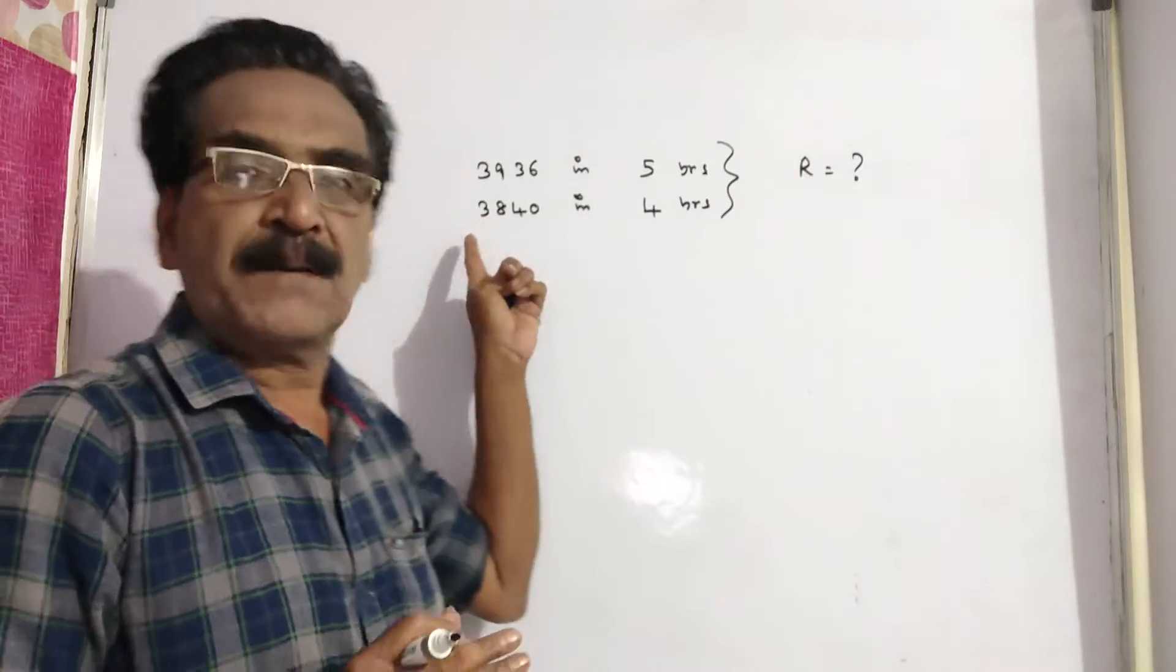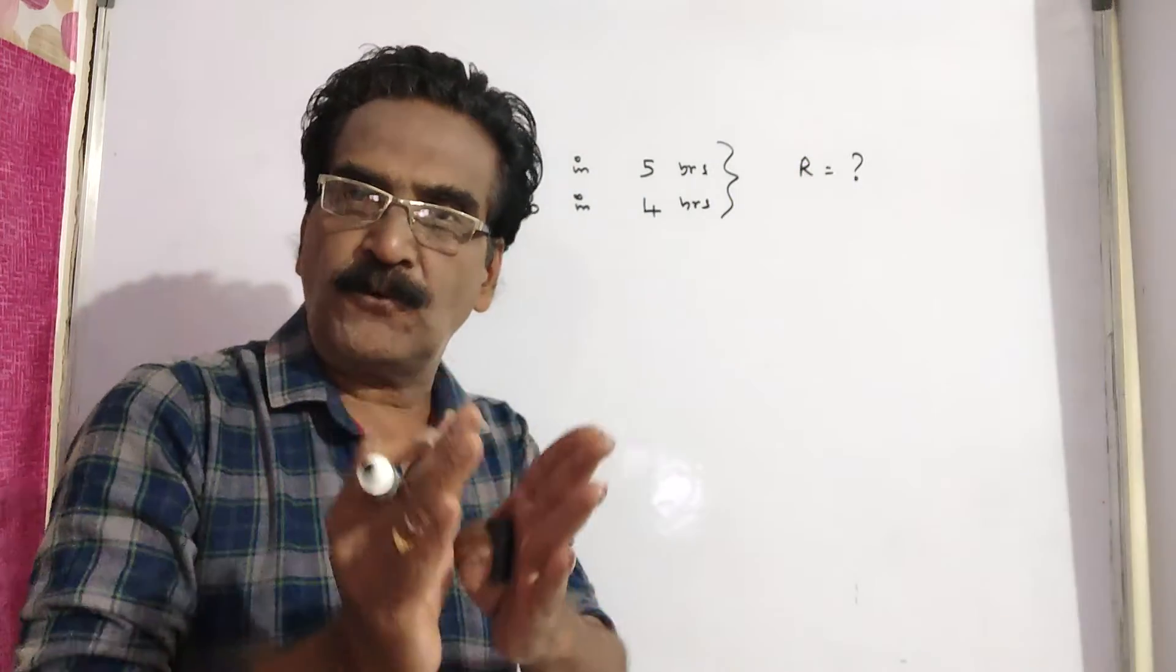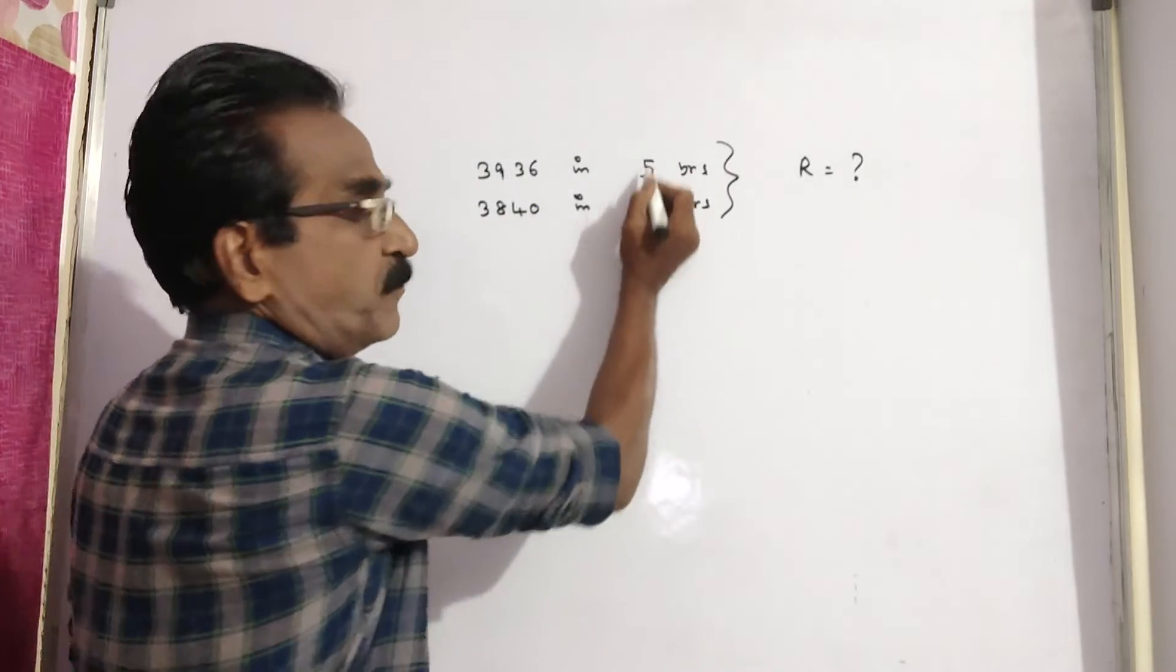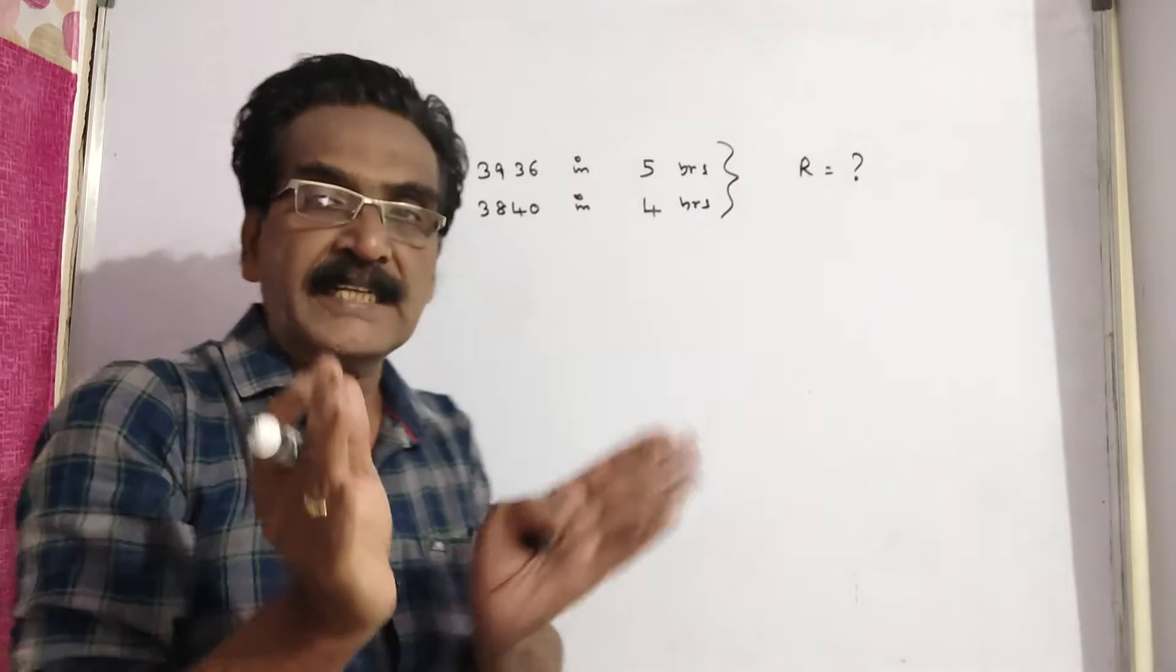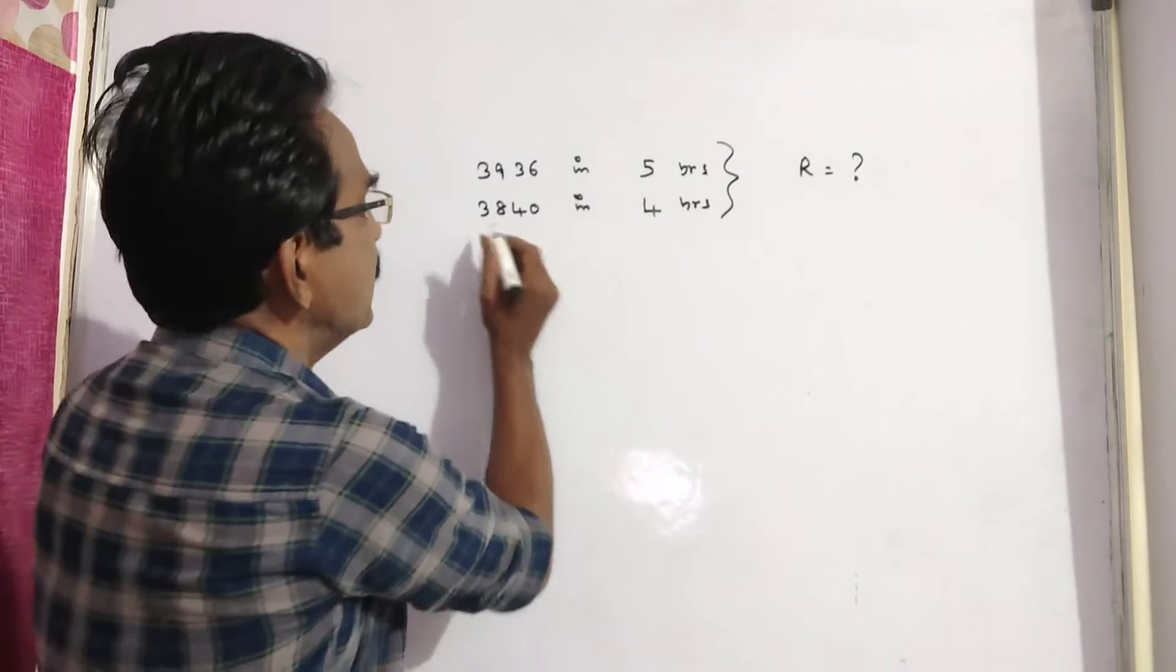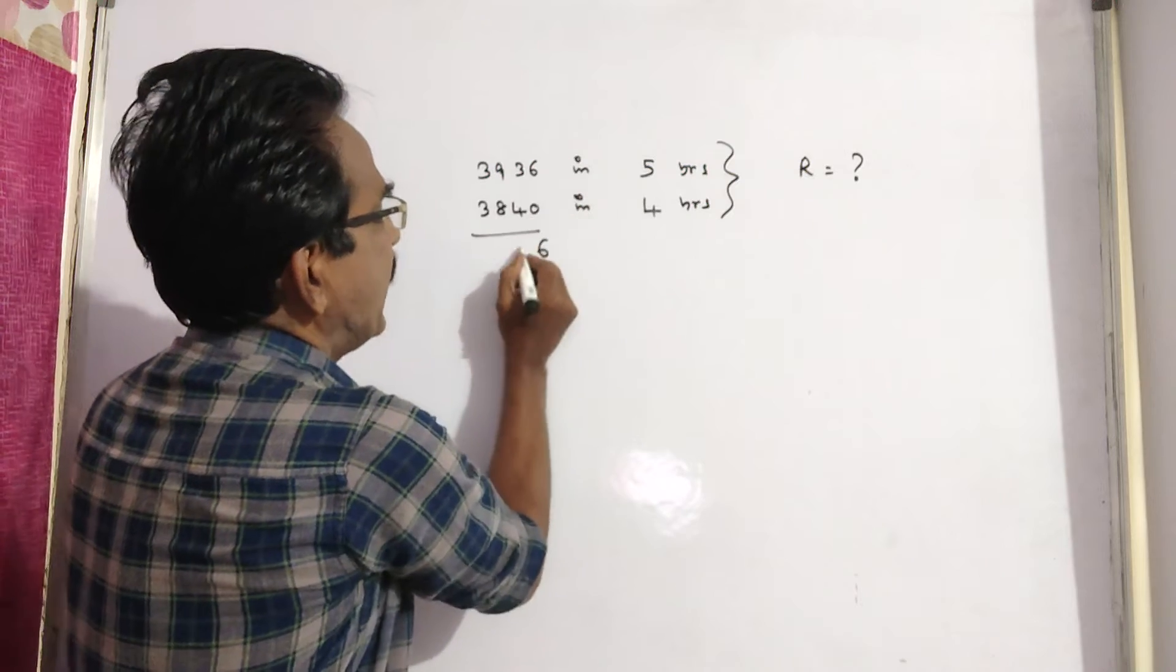See friends, it amounts to 3840 in 4 years and 3936 in 5 years. That means in 1 year, the interest on rupees 3840 is the difference, 96 rupees.